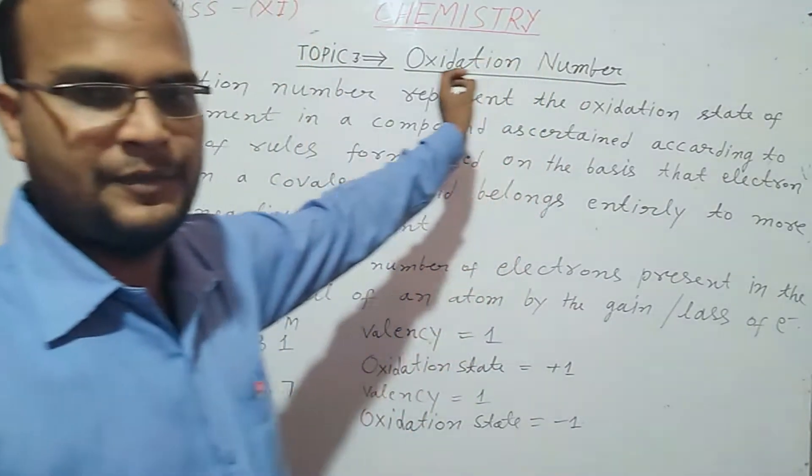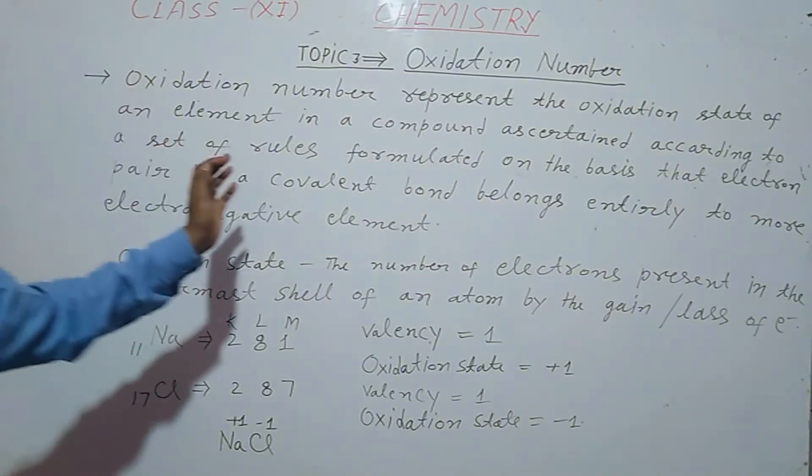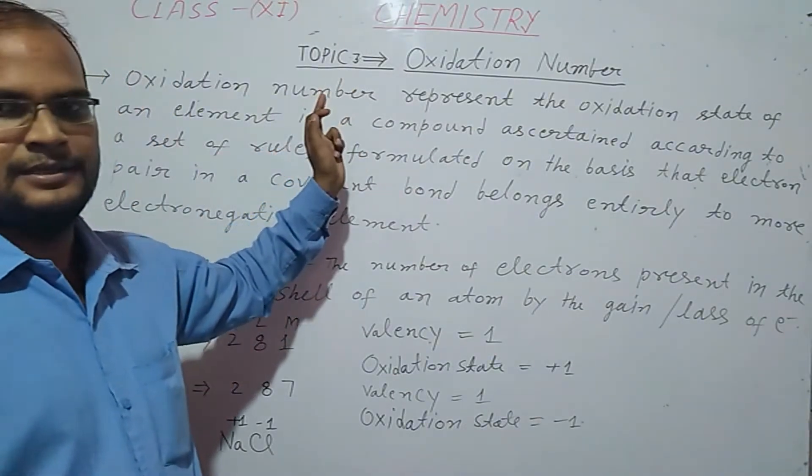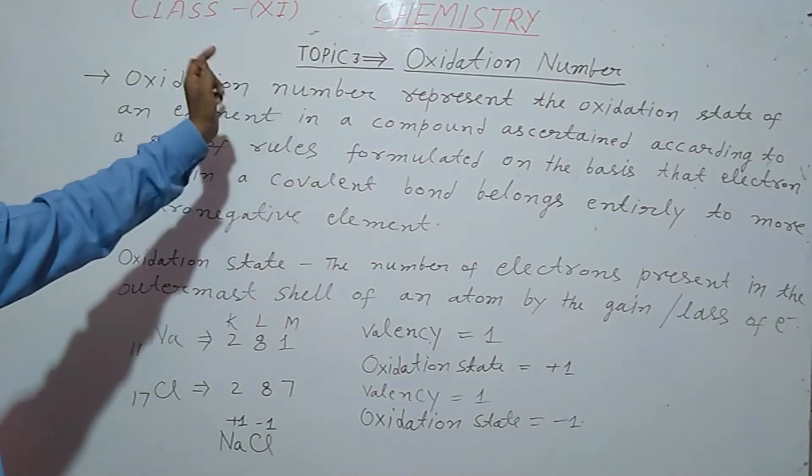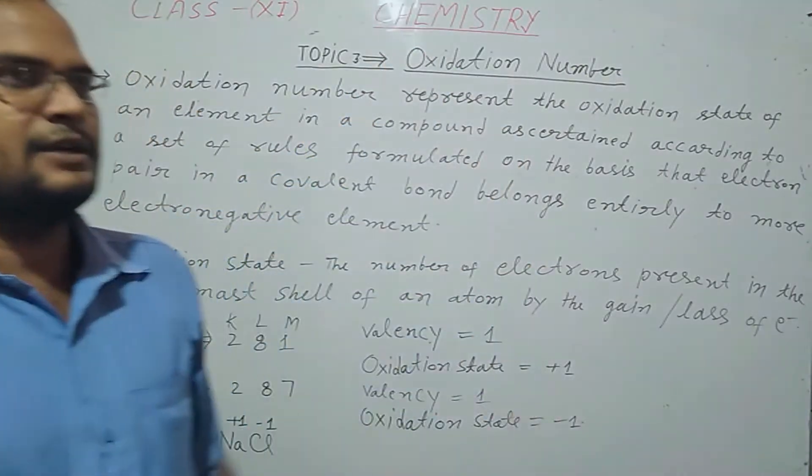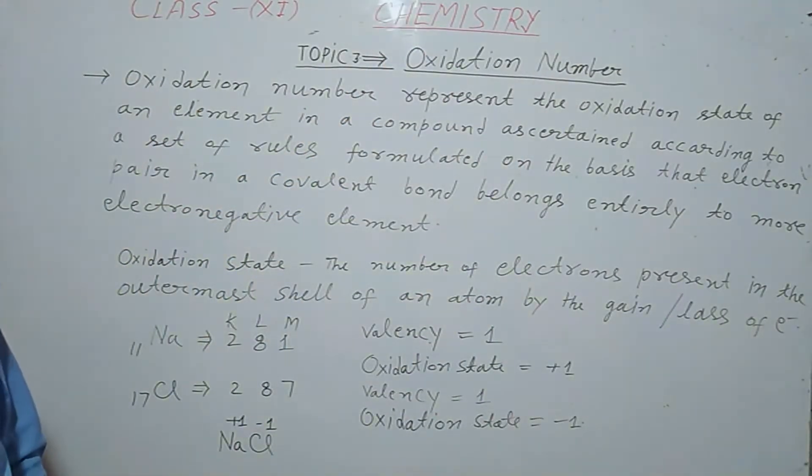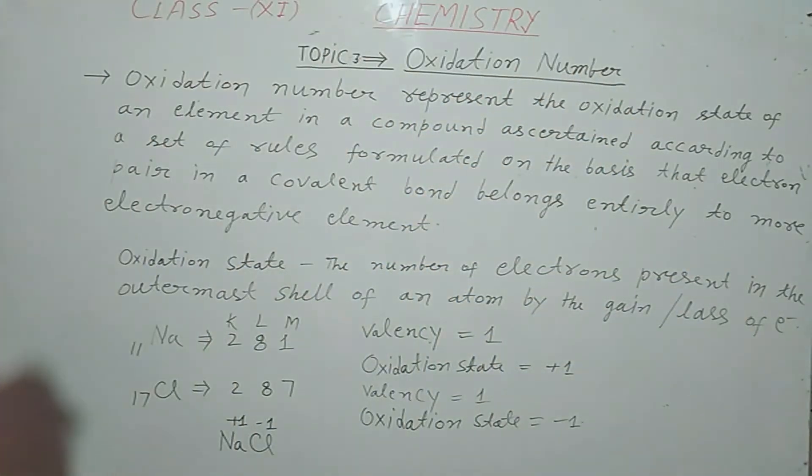Before this topic, I explained you in the last class, topic first of redoxidation definition on the basis of classical concept and topic second on the basis of electron transfer concept. Now the topic third, that is oxidation number. What is oxidation number? First of all, we see.